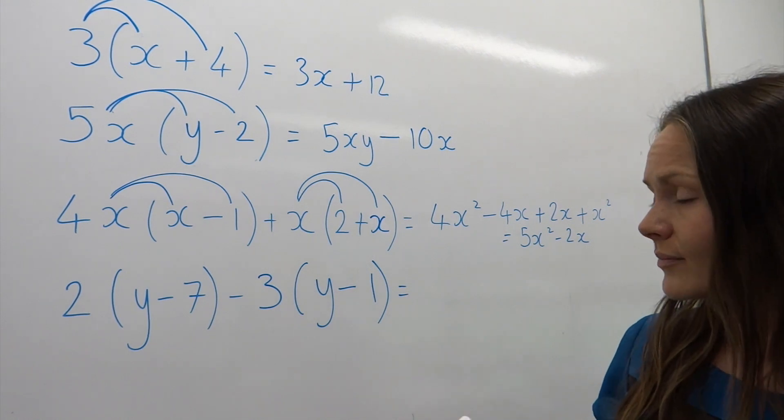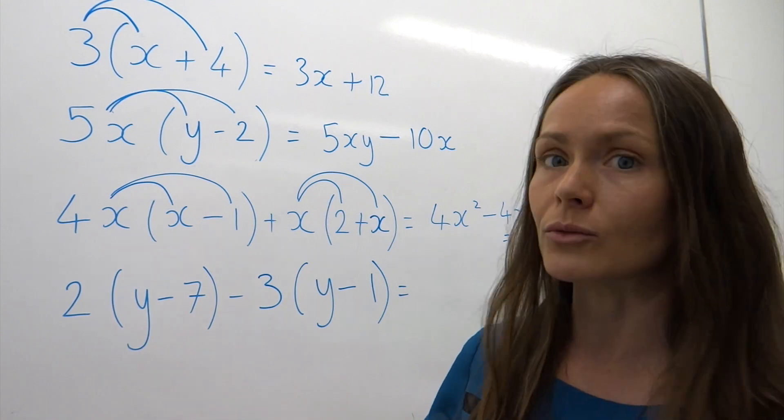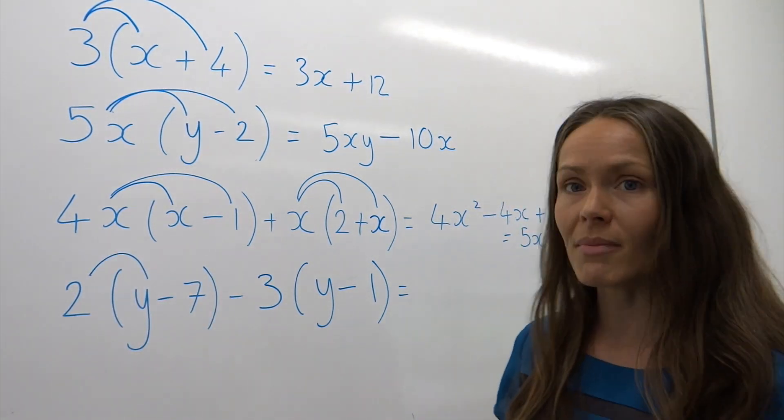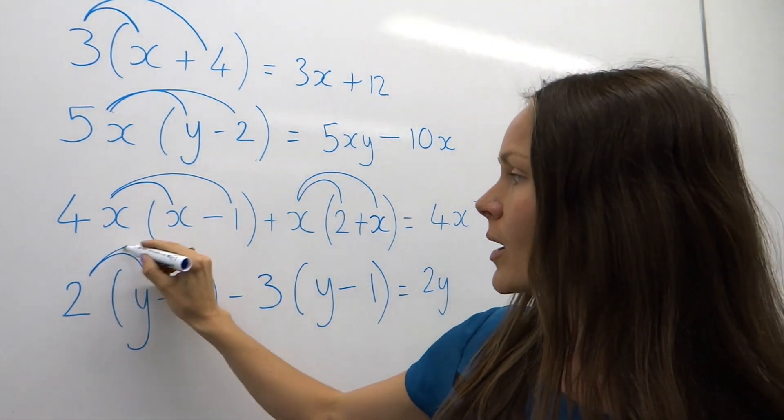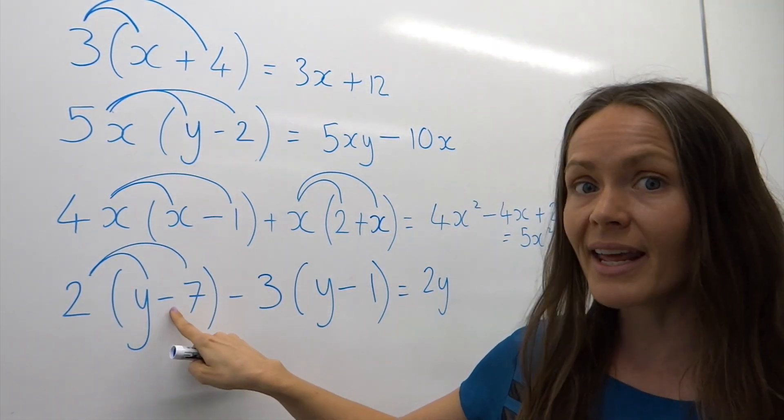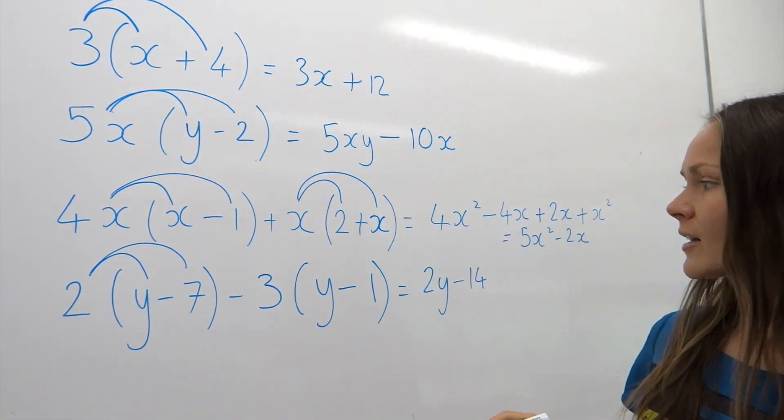Now the last one. The first bracket: I'm going to multiply this bracket by 2. The first step, 2 multiplied by y is 2y. 2 multiplied by, be careful, negative 7 is negative 14.